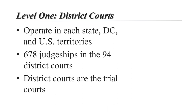District courts are the trial courts where nearly all federal cases begin. They make decisions on the death penalty, drug crimes, and a whole range of civil law violations. District court judges normally hold trials and decide cases individually. Only one judge is assigned to each case, with the exception of cases where a statute calls for a three-judge panel. District court decisions can be appealed.